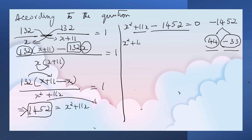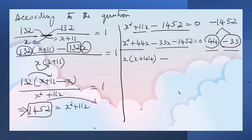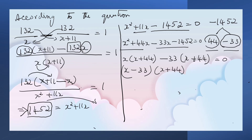So: x squared plus 44x minus 33x minus 1452 equals 0. Grouping: x times (x plus 44) minus 33 times (x plus 44) equals 0. Here, negative 33 times positive 44 gives negative 1452. Therefore, (x minus 33) times (x plus 44) equals 0.